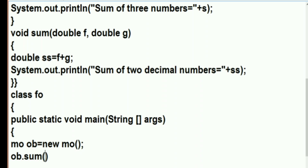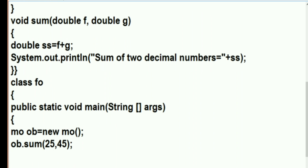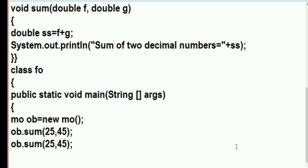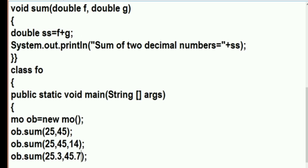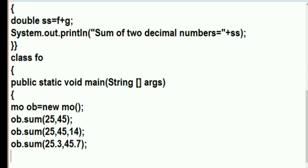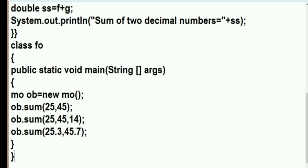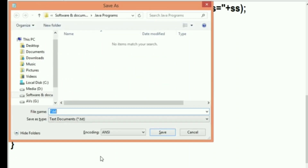It's time to call the methods using 'ob.sum'. It depends on the kind of value we give as an argument. If we give 25 and 45 — both integer values — the first method will be called. When we add a third value, say 14, the second method with three arguments will be called. And when we write 25.3 and 45.7 — double values — the third method will be called. In this way we completed the program.